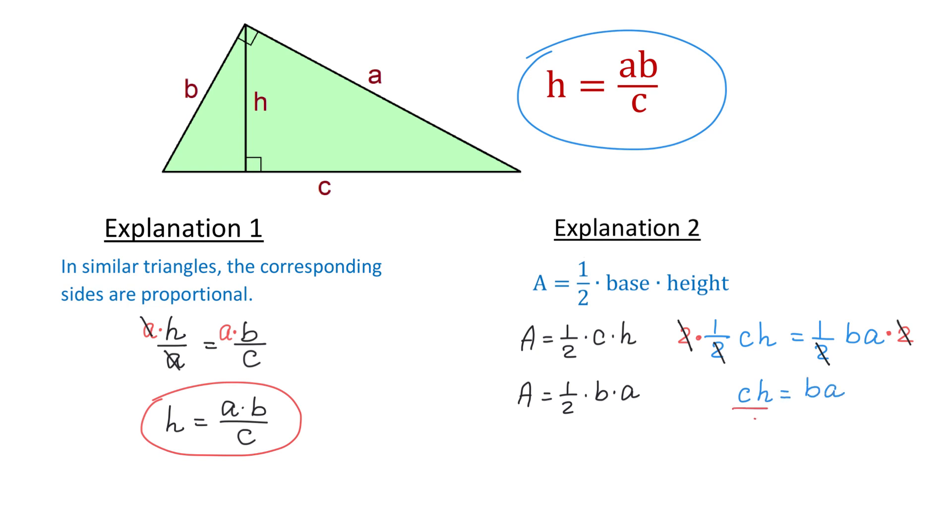Then we will divide both sides by C, and we will write that H equals AB divided by C. So here again, we got the same formula.